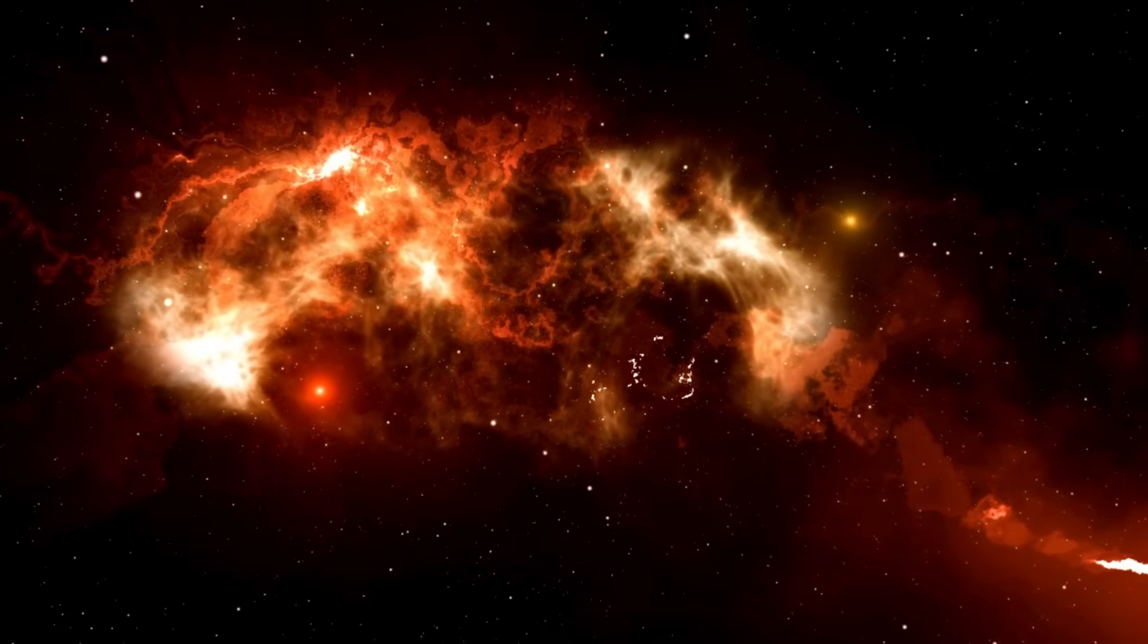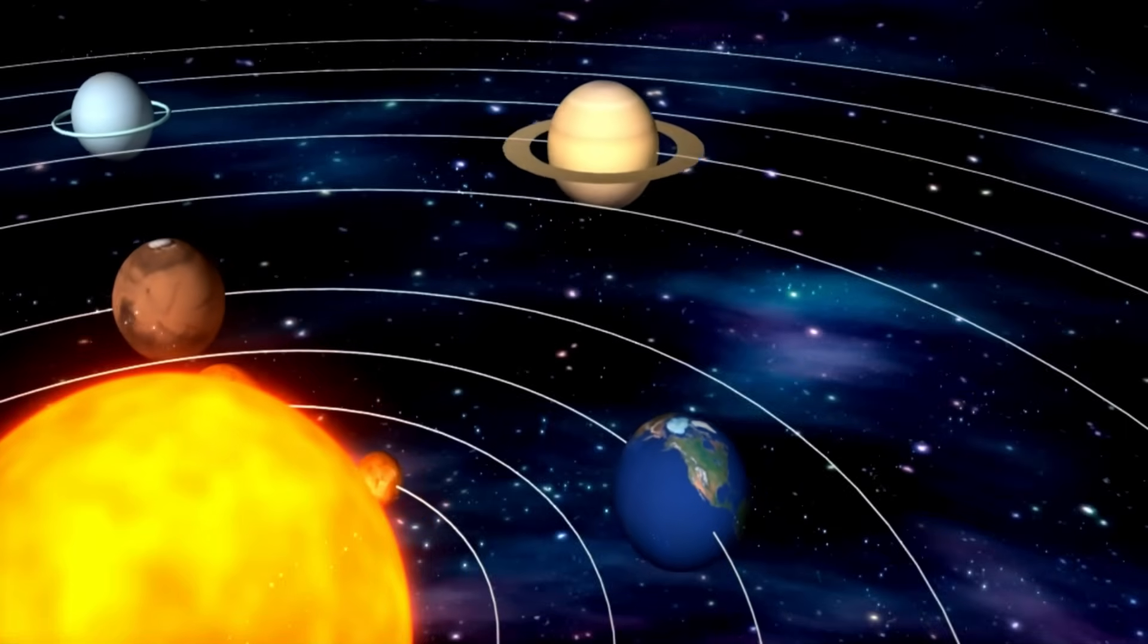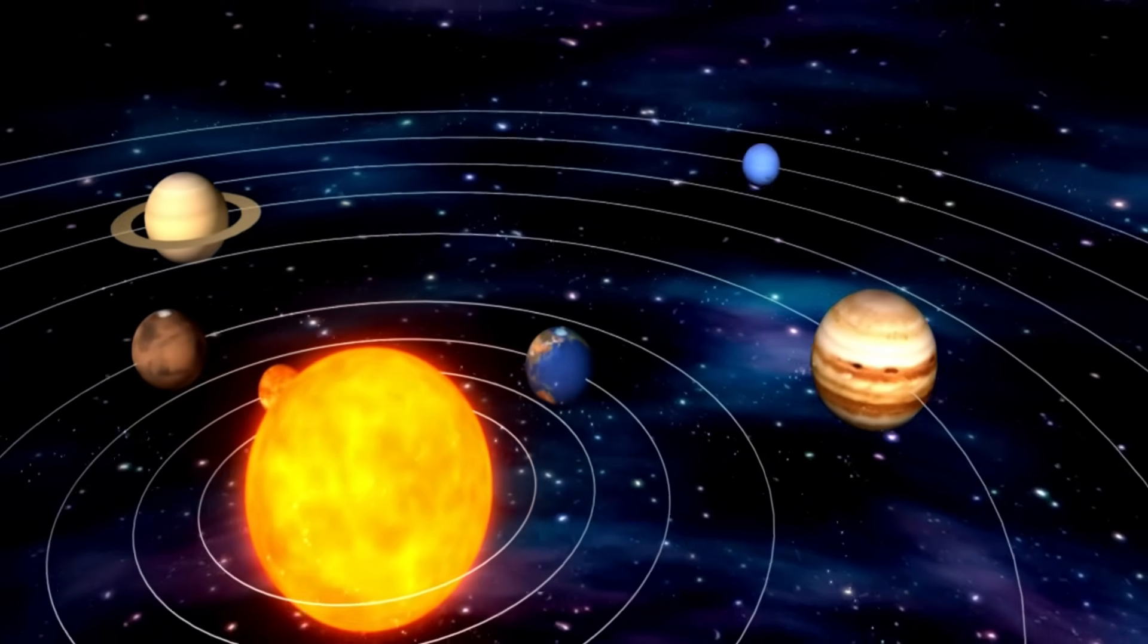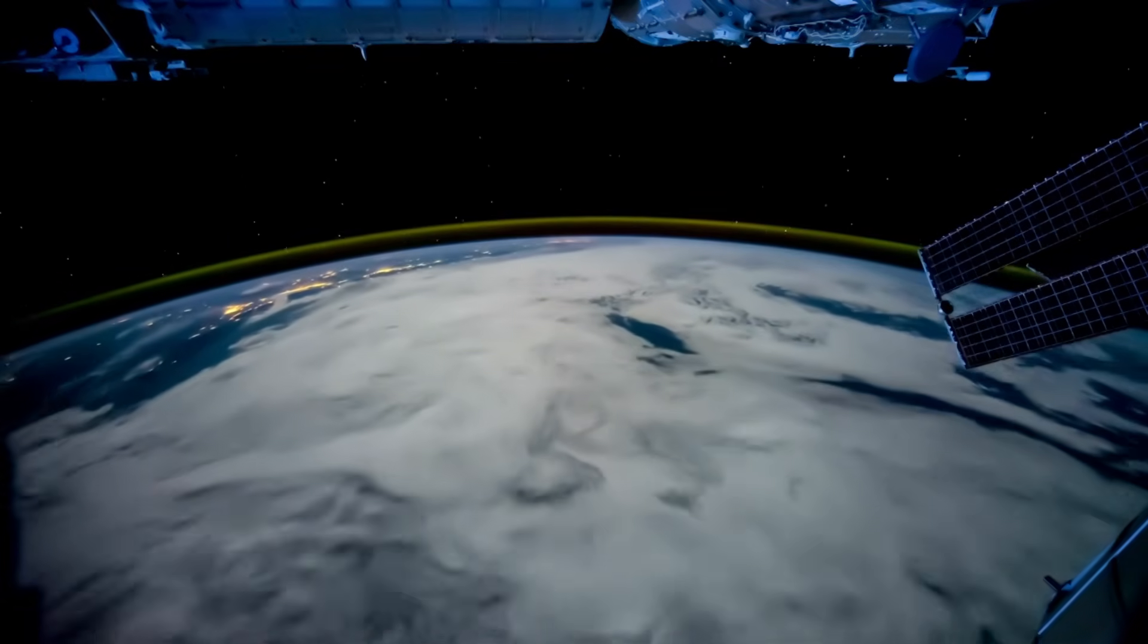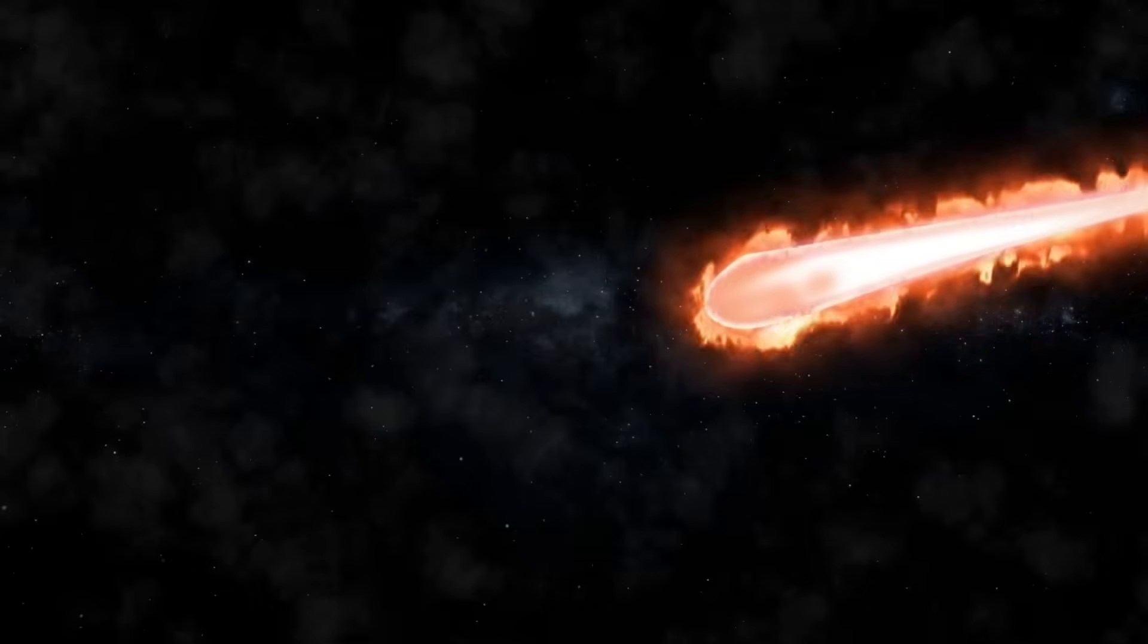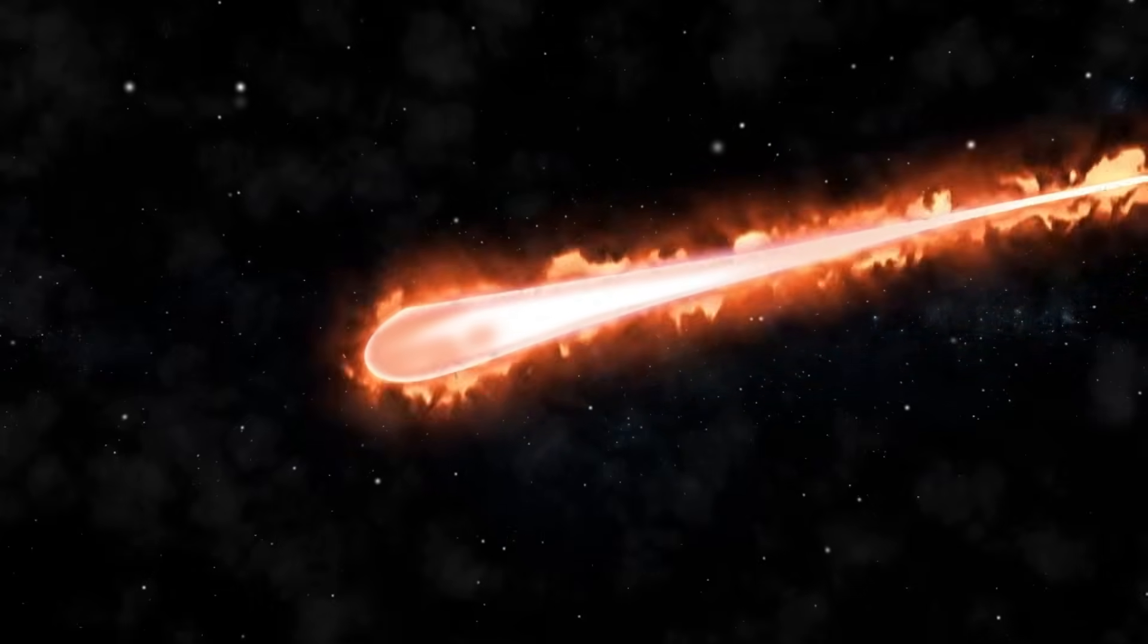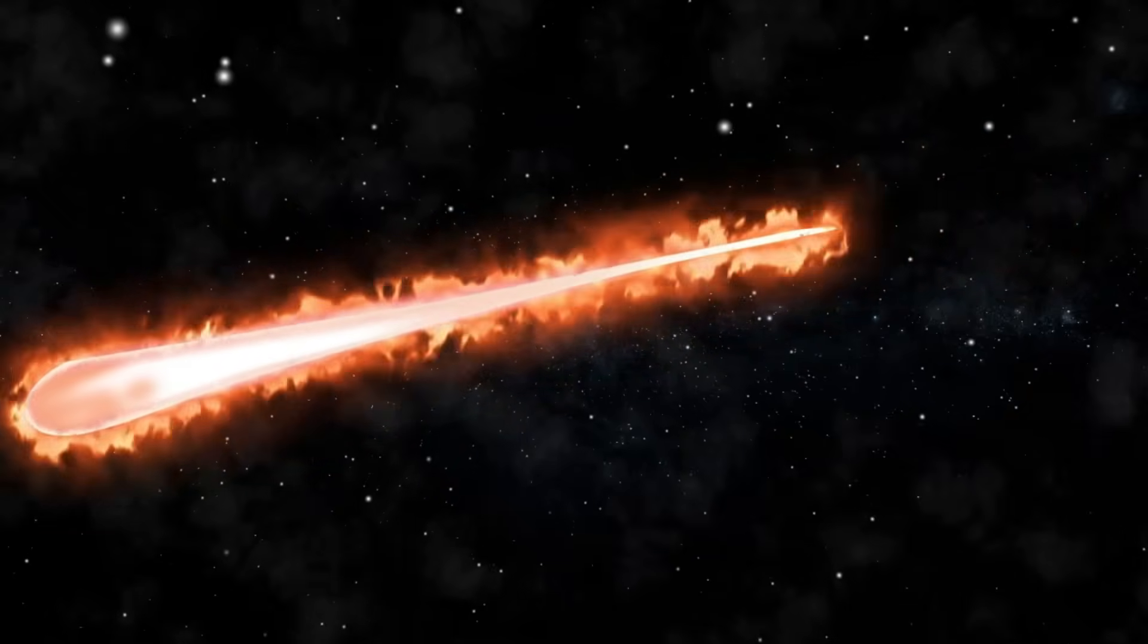When a red supergiant like Betelgeuse nears the end of its life, it will no longer be able to sustain nuclear fusion in its core. Gravity will overcome the outward pressure produced by the fusion reactions, causing the core to collapse. In an instant, the implosion will trigger an enormous explosion, expelling the star's outer layers into space in a dazzling supernova event. Astronomers believe Betelgeuse is close to this evolutionary phase.